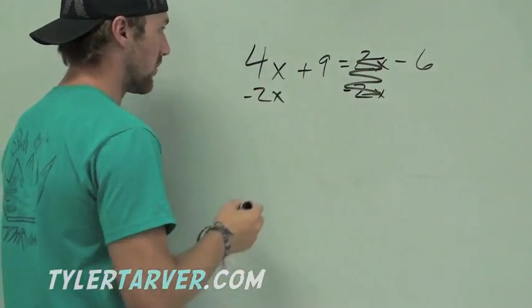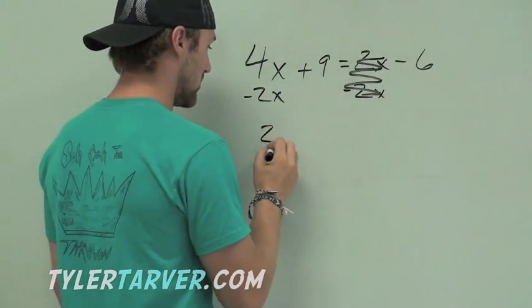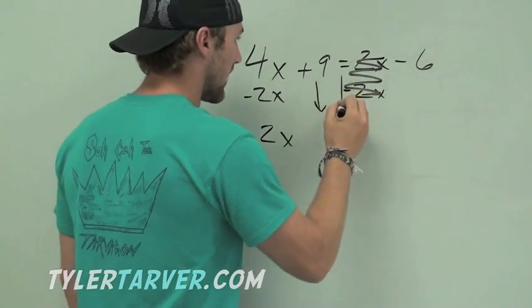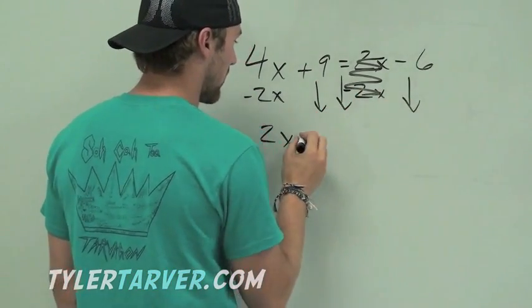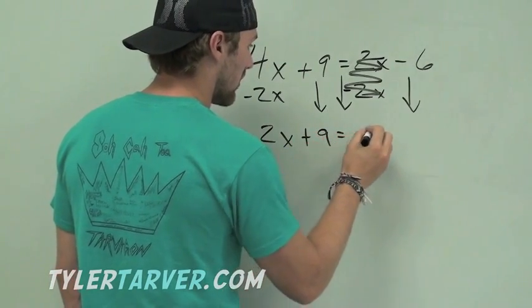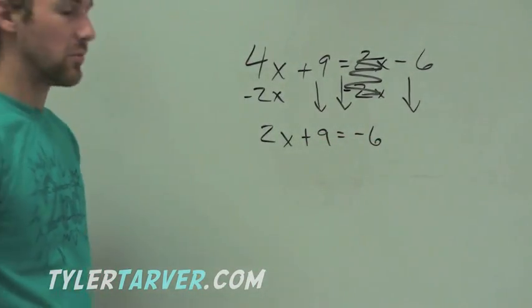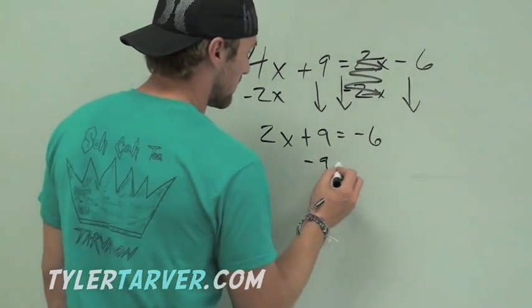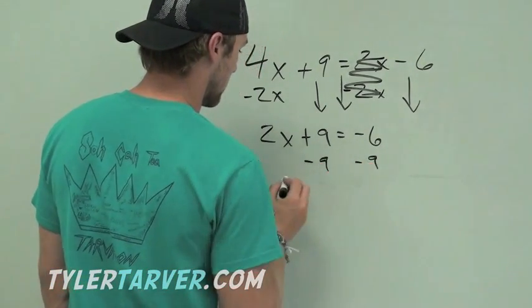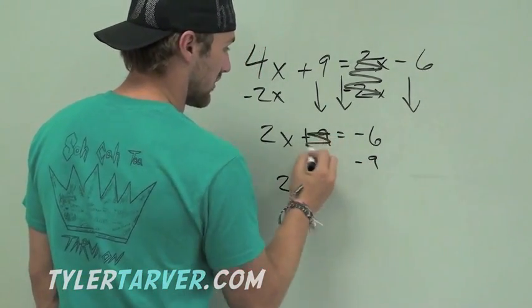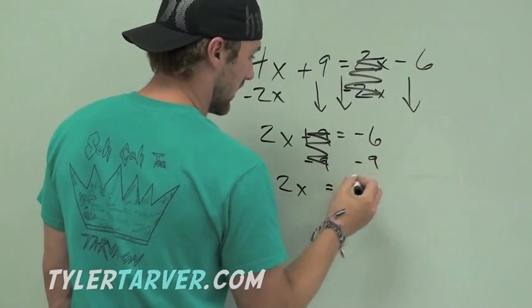Mark that out. 4x minus 2x is 2x. Bring everything else down. Keeping it in order. What's the opposite of adding 9? It would be subtracting 9. This cancels out. It would be negative 15.